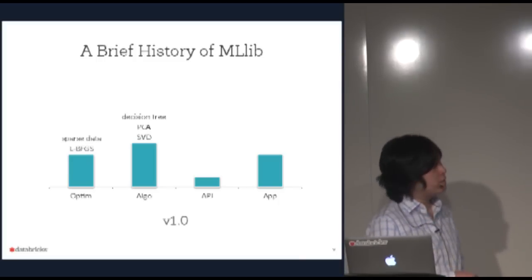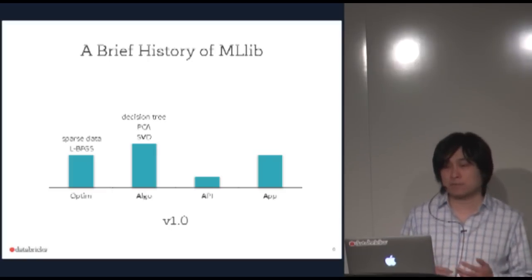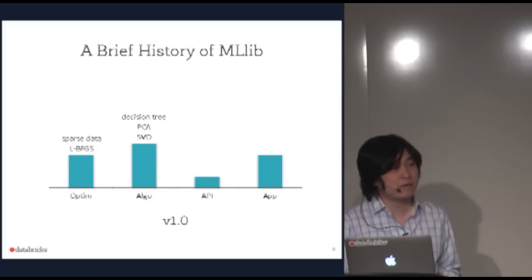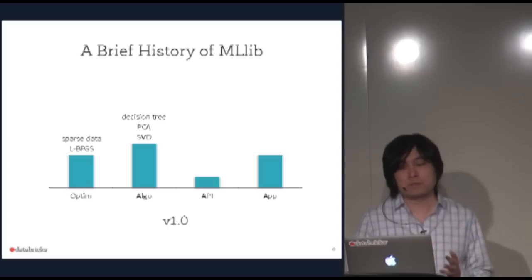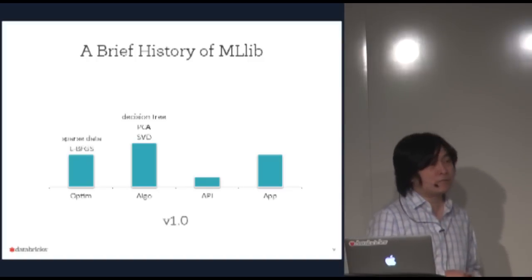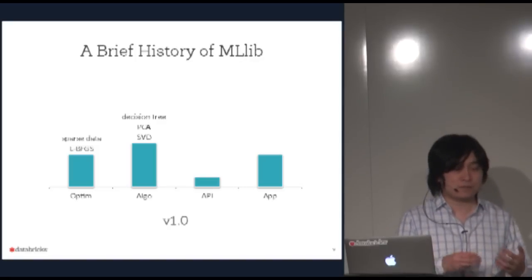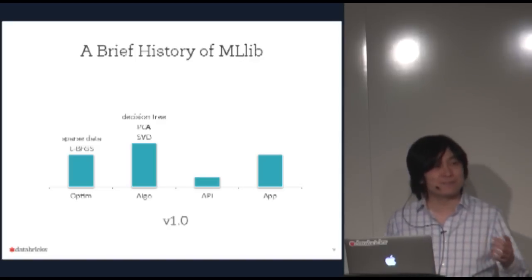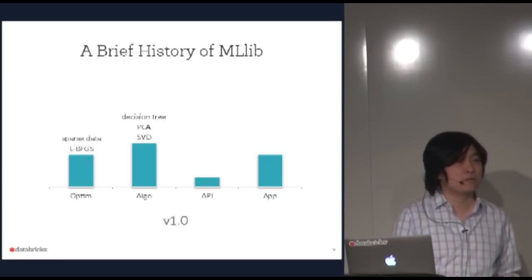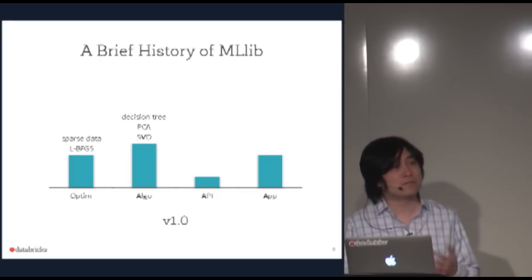In version 1.0 we boosted performance by supporting sparse data, exploiting sparsity for both storage and computation. We also added L-BFGS, decision tree, PCA, and SVD. At this point we started seeing users running MLlib in production jobs. Since it's open source it's hard to know exactly who is using it, but by monitoring the user mailing list I got a feel for the growing user base.